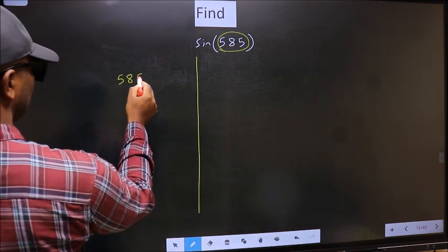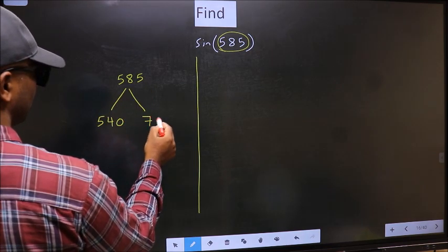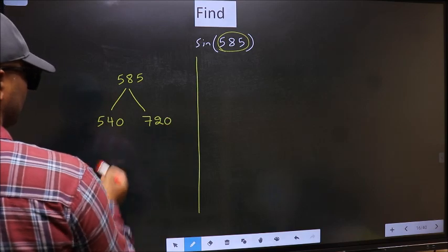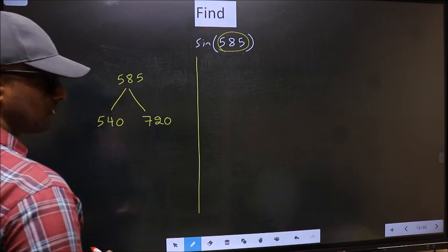585 lies between 540 and 720. This is 180 into 3 and this is 180 into 4.